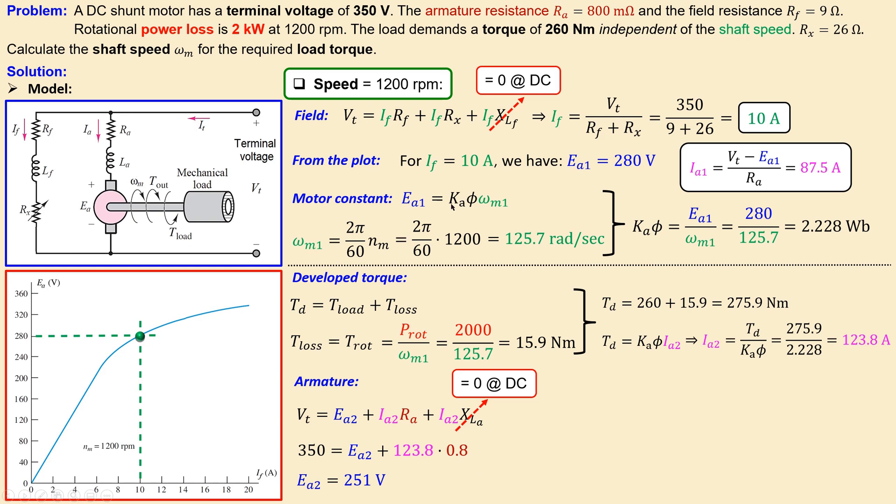I can use this similar formula which relates the shaft speed to the back EMF voltage, using a new shaft speed which is the required shaft speed for this load torque. If I now rewrite this I can calculate the shaft speed using 251 over the motor constant. We already calculated that and that will give you 112.6 radians per second.